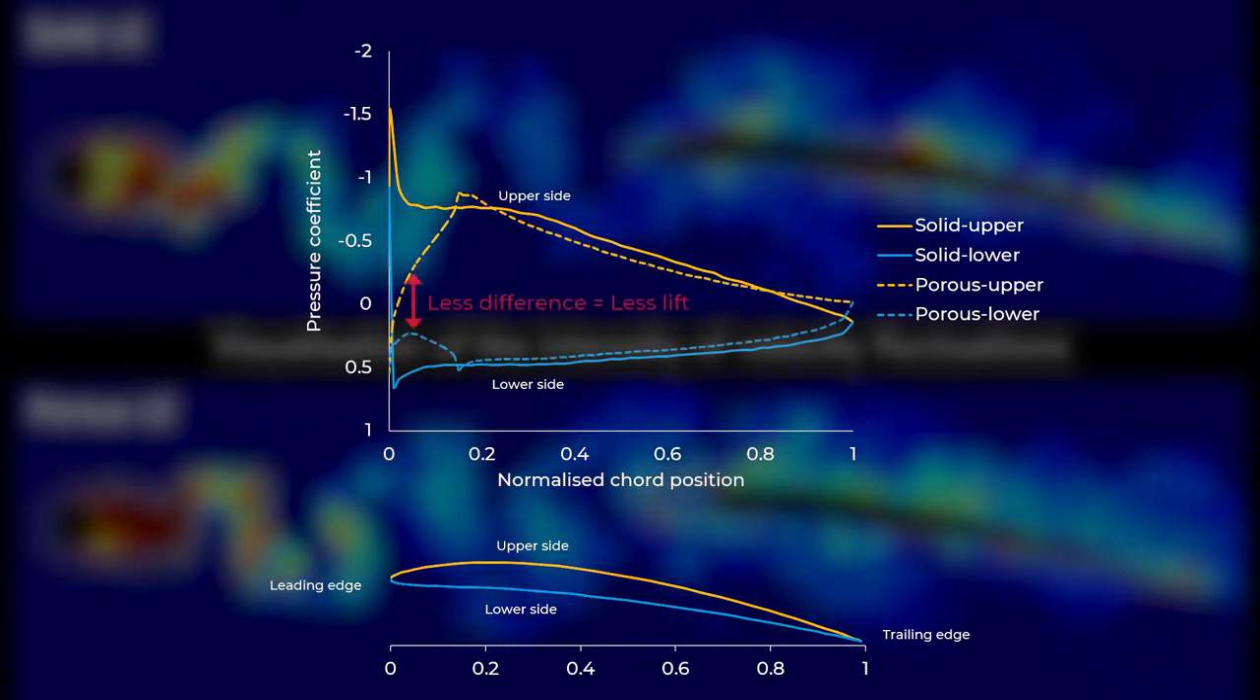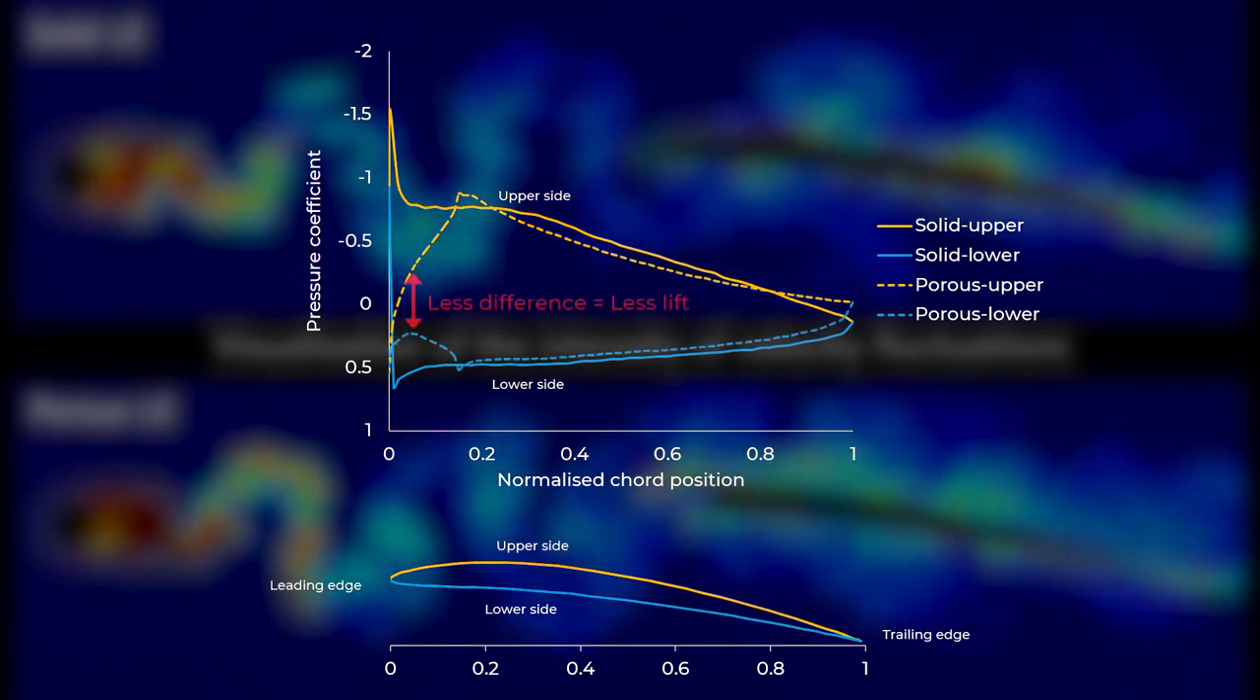This leakage happens because of the pressure difference between the two sides, which originally gives the airfoil its lift. So because of the porous material being there, the pressure difference becomes smaller, and so does the lift production.